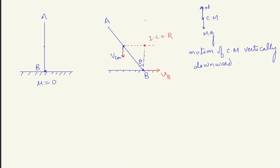We can assume that the body is doing pure rotation with omega about this ICOR point, and its kinetic energy can be written as half I (about this point) times omega squared — this is the instantaneous axis of rotation, which passes through the instantaneous center of rotation and is perpendicular to the plane of rotation. For energy conservation, initially the center of mass was at height L/2, and now the center of mass is at height L/2 cos theta.